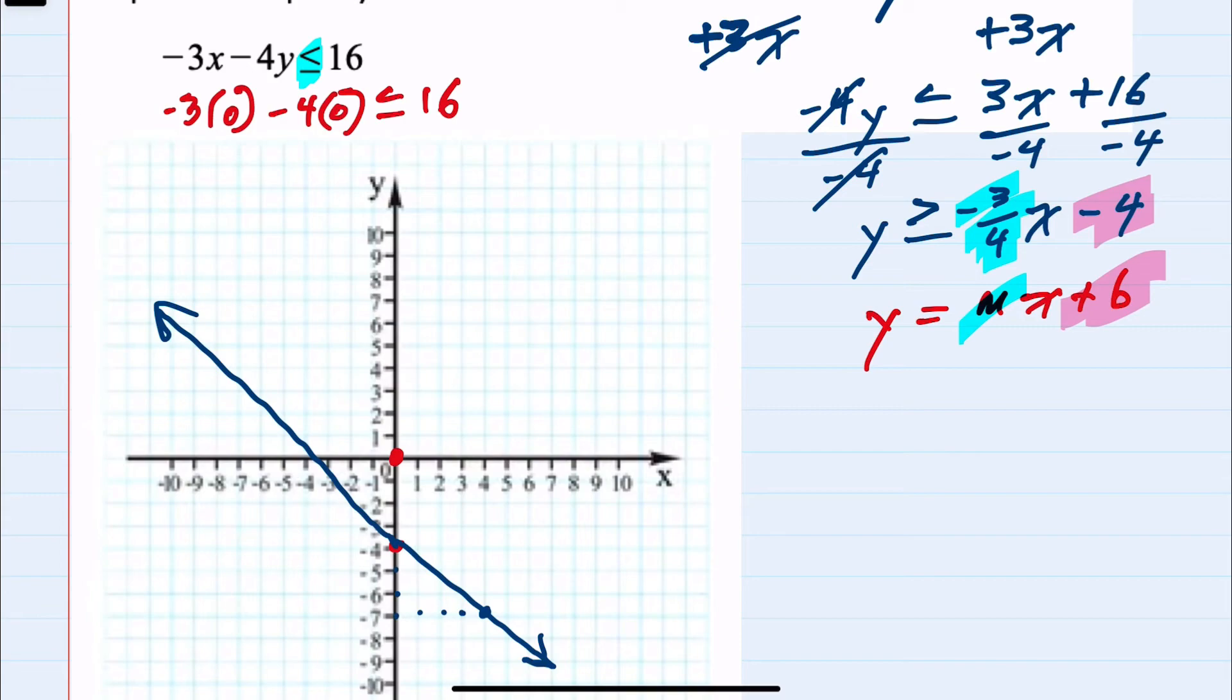Simplifying the left side: -3(0) = 0 and -4(0) = 0, so this becomes 0 ≤ 16.